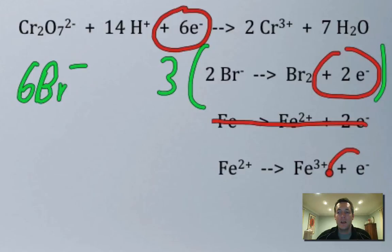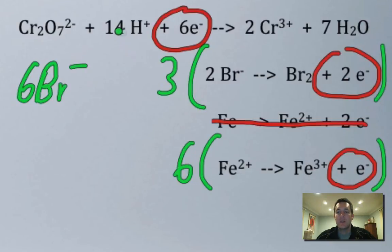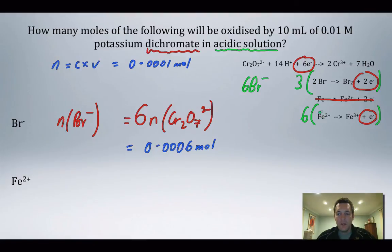I've got one electron in this half equation, so I'm going to multiply this equation by six to give me those six electrons.